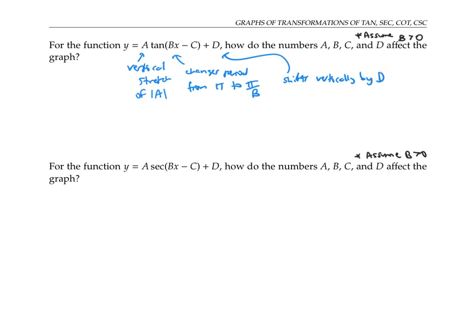The number d shifts vertically by d. And finally, to figure out what the number c is, we have to rewrite our equation in factored form, factoring out the b. And so we see that there's a phase shift right by c over b.